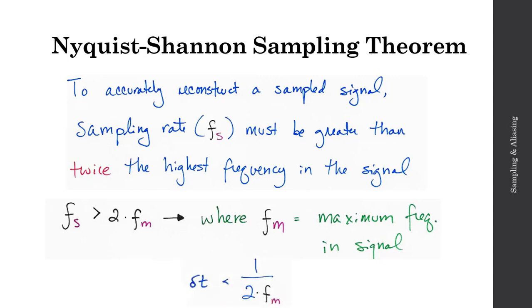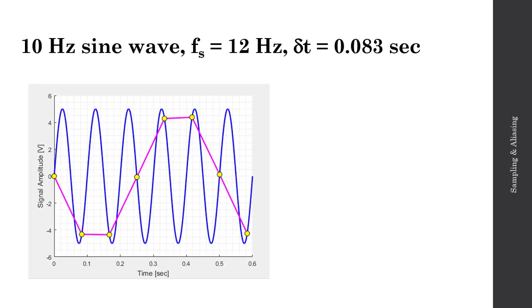We could also write this as delta t, my sampling interval, must be less than 1 over quantity 2 times Fm. So if I follow these rules from the Nyquist-Shannon sampling theorem, I should be able to accurately reconstruct my signal.